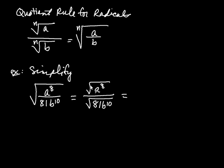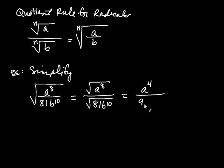In the numerator, the square root of a to the eighth — for the exponent, it's division: eight divided by two is four, so it's a to the fourth. In the denominator, the square root of 81 is 9. For the exponent, ten divided by two is five, so it's 9b to the fifth. That would be our answer for this one.